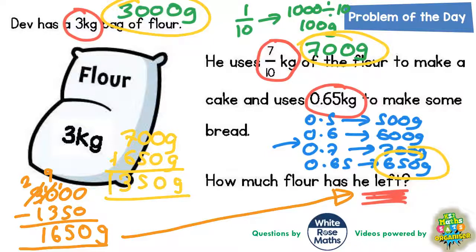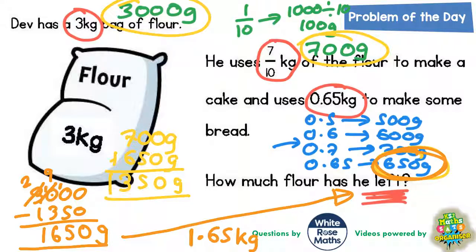If you wanted to do that as an answer just in kilograms, well the 1,000 would be one whole kilogram and the 650g would be 0.65 of a kilogram. And we know that because we've already said that 650g is 0.65 of a kilogram.